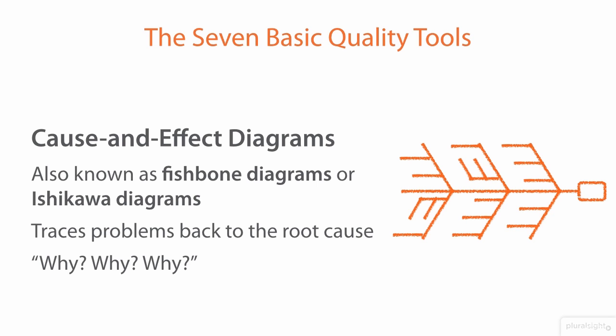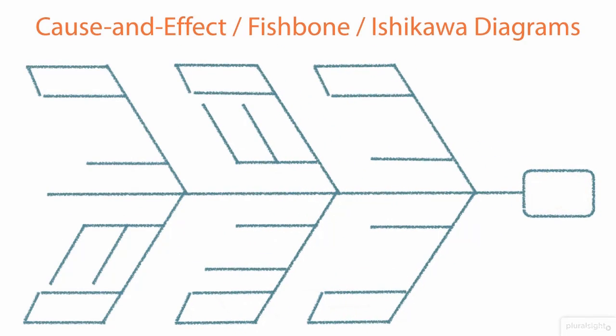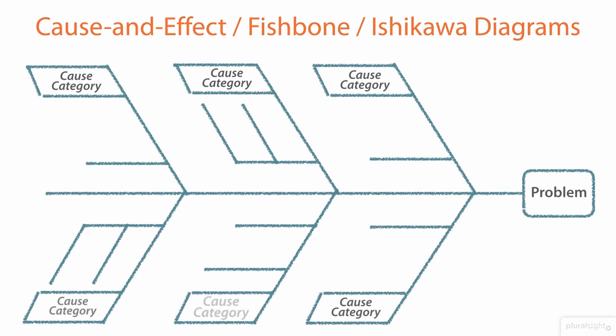We begin with a problem and ask why that's a problem, then we ask why a second time based on whatever our answer might have been, and so on. When we start with an Ishikawa Diagram, we see the problem placed on the right-hand side, with different cause categories placed throughout each of the arrays. This is why we refer to it as a Fishbone Diagram — because it looks like the skeleton of a fish.